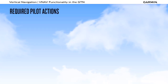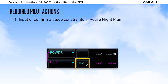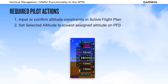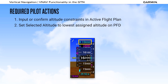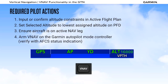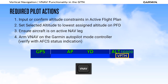There are certain pilot actions required to ensure successful employment of VNAV. First, you need to input or confirm that altitude constraints are shown in the active flight plan. Second, you must set a selected altitude that is lower than the current altitude — for ATC-controlled operations, this should be the lowest altitude to which you were cleared to descend. Third, ensure the aircraft is on an active nav leg. Finally, ensure VNAV is armed on the Garmin autopilot mode controller if so equipped. If a pilot action is missed or a limitation exceeded, alternate methods should be used, including vertical speed mode, VNAV Direct 2, or hand-flying.